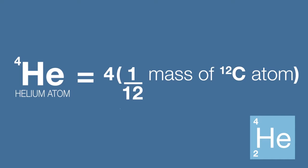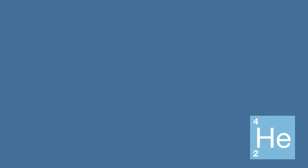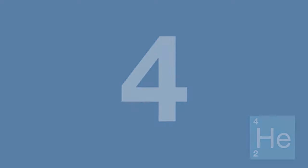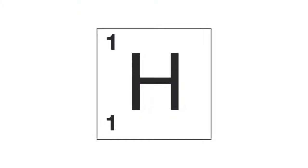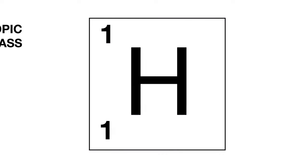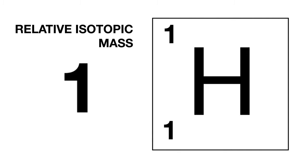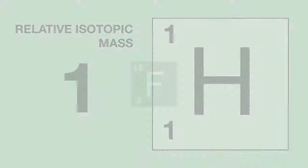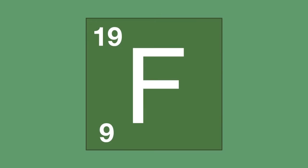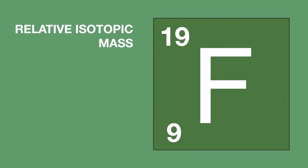Of course, it's far easier to write this simply as four. Following this rule, a hydrogen atom has a relative isotopic mass of one, and a fluorine atom has a relative mass of 19.